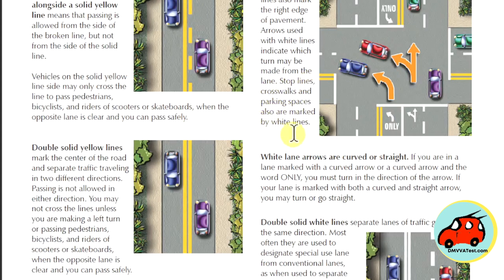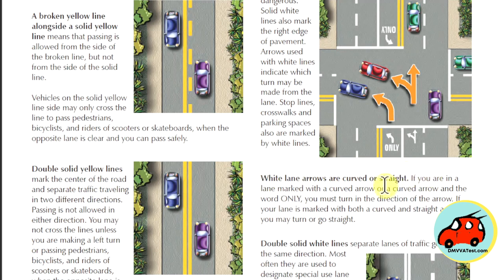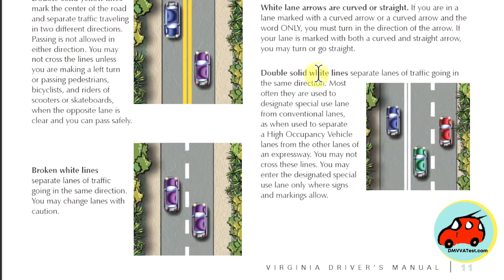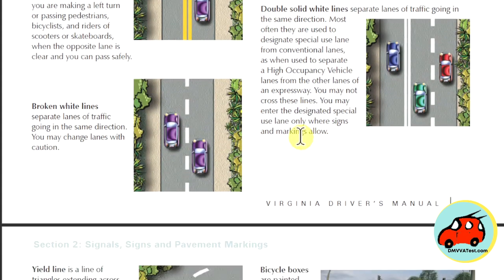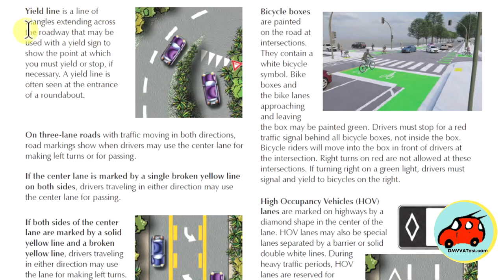Stop lines, crosswalks, and parking spaces are also marked with white lines. White lane arrows are curved or straight — if you're in a lane marked with a curved arrow and the word only, you must turn in that direction; if the lane has both a curved and a straight arrow, you can go either direction. A double solid white line separates lanes of traffic going in the same direction — most often seen with HOV or express lanes that require a special pass or two or more occupants. A yield line is a line of triangles extending across the roadway used with a yield sign to show the point at which you must yield or stop if necessary; yield lines are often seen around roundabouts.